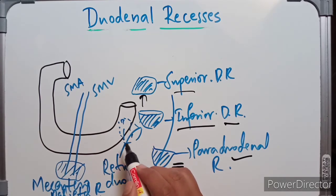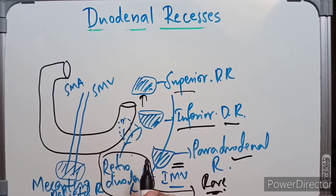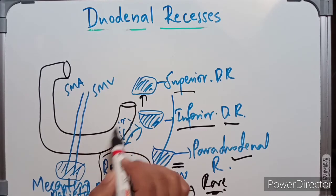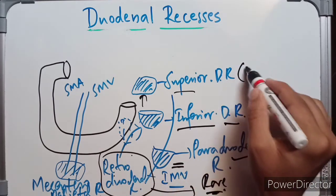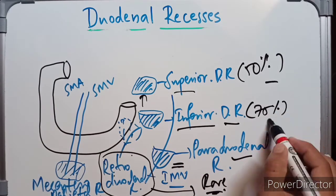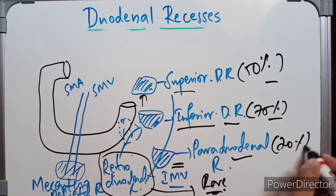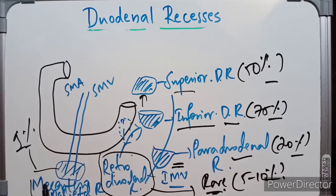The paraduodenal fold contains the inferior mesenteric vein in its free border. The retroduodenal recess is the largest duodenal recess but is rarely present; when present, it lies behind the third and fourth parts of the duodenum with its orifice looking downward and to the left. Regarding incidence: the superior duodenal recess is present in about 50% of cases, inferior duodenal recess in about 75% of cases, paraduodenal recess in up to 20% of cases, and retroduodenal recess in only 5–10%.